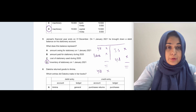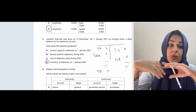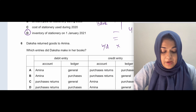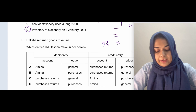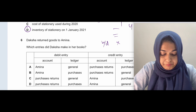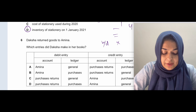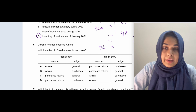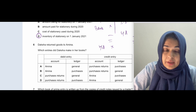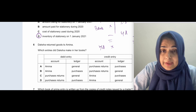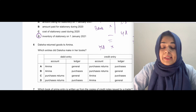So to summarize: inventory of stationery at the start of the year is brought down. During the year you purchase stationery and use stationery — the used portion goes to the income statement. The remaining inventory at year end is carried down, and that carried-down amount becomes the brought-down balance for the next period.